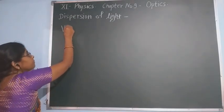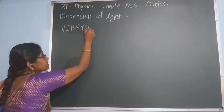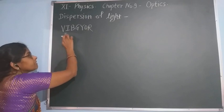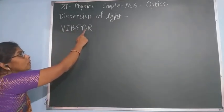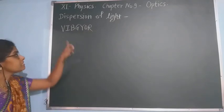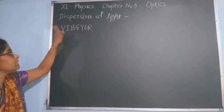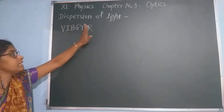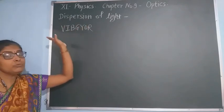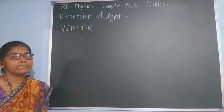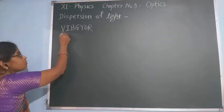Due to dispersion of light we get the VIBGYOR sequence: Violet, Indigo, Blue, Green, Yellow, Orange, Red. This is the visible light, which consists of electromagnetic waves.